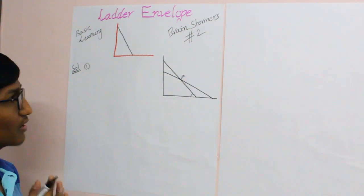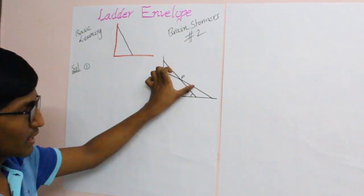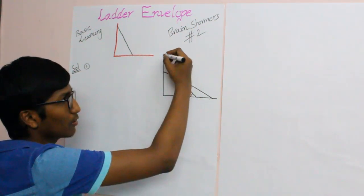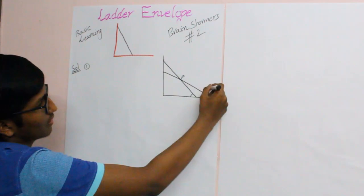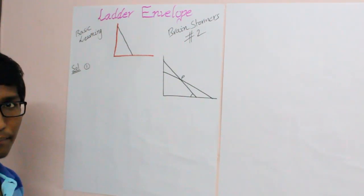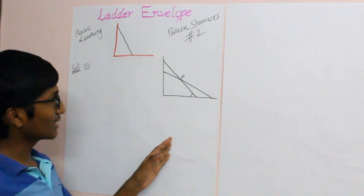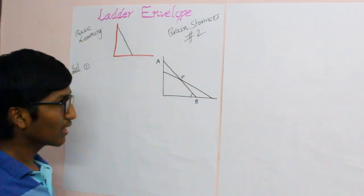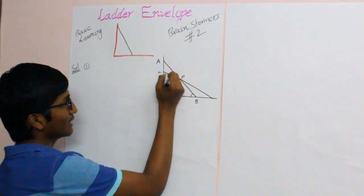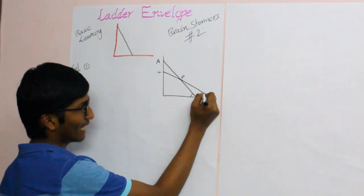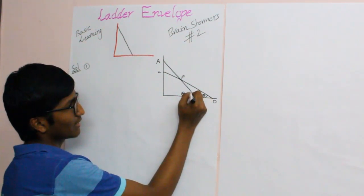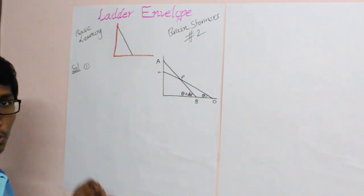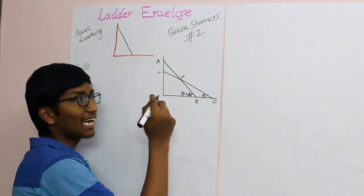The ladder envelope is nothing but the set of points the ladder covers in space as it moves. The envelope denotes the boundary of the area enclosed by those points with the coordinate axis — the border of that area is the envelope. To find that envelope, suppose in the initial position the ladder is at AB, and after moving a small bit it comes to CD. Let this angle be theta, and the next position makes a slightly greater angle. Finding the envelope is nothing but finding the locus of point P. I will assume this as the x-axis.